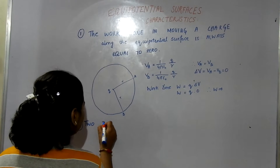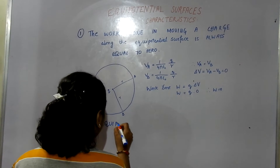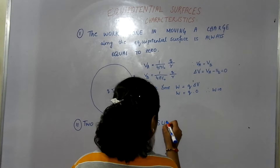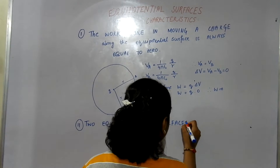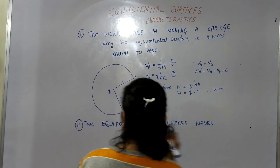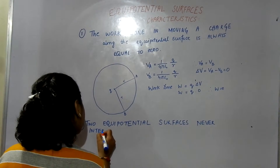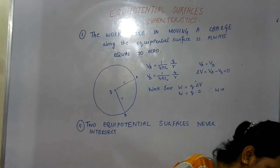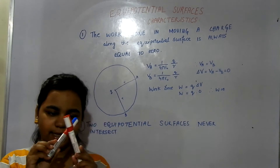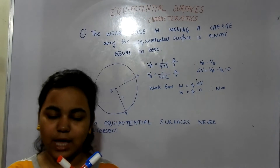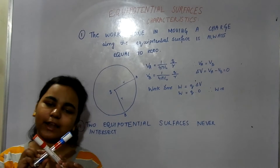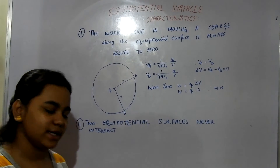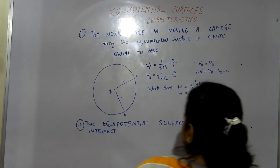Our second characteristic is: two equipotential surfaces never intersect. Why do they not intersect? If I consider two equipotential surfaces and they intersect at a particular position, there will be two directions at that point. In reality, there cannot be two directions at a single position. So two equipotential surfaces can never intersect. This was our second most important characteristic.